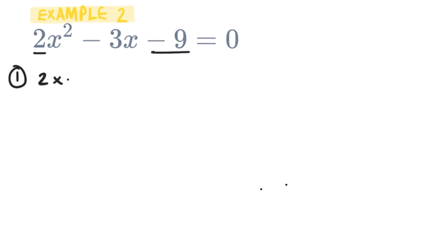So 2 multiplied by -9 equals -18. And then we're going to write out some factors. So -18 can equal -6 multiplied by 3, -9 multiplied by 2, -18 multiplied by 1. But we can see that in this situation -6 multiplied by 3 is a factor pairing that does work.